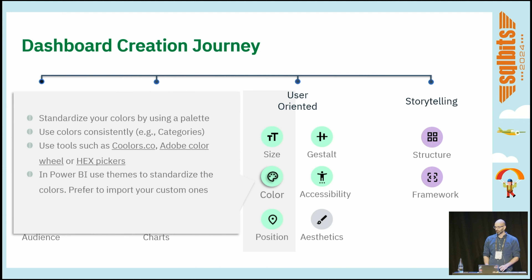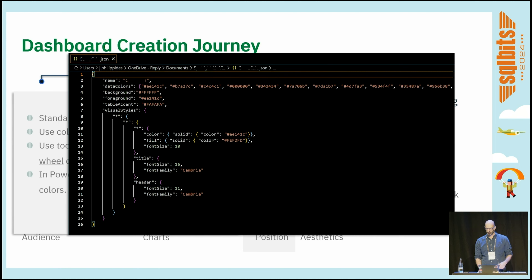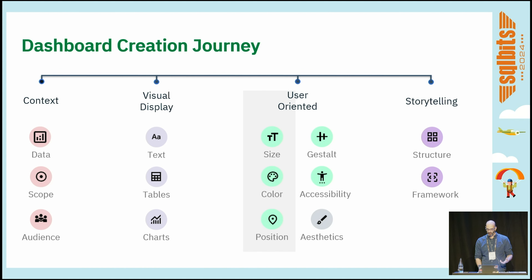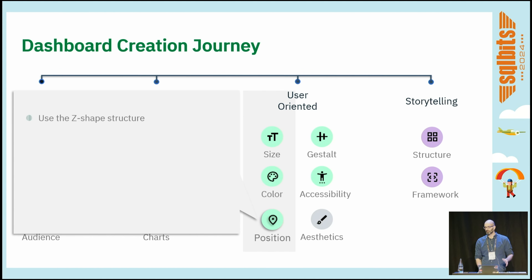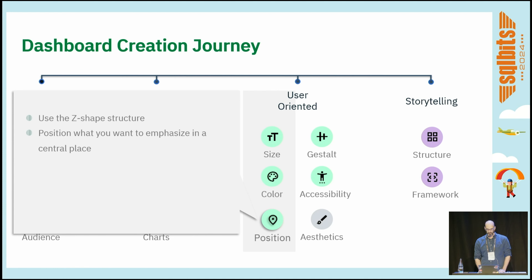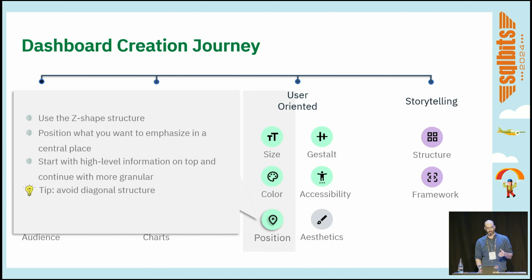It's also good practice to use Power BI themes for several reasons. Many come out of the box, but we can also import customized ones with simple JSON files. Regarding position: in the Western world, most people read in a Z-shaped structure — top to bottom and left to right. We can use this strategically to emphasize things and direct the user's attention. Generally, start at the top with high-level information and gradually go down with more granular information. By all means, avoid using a diagonal structure.